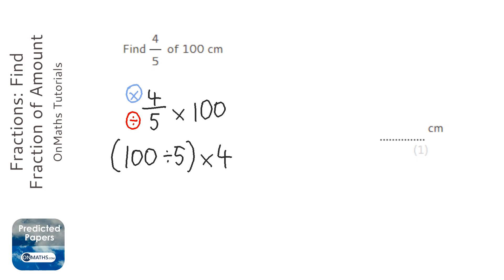So 100 divided by 5, well 5 times what is 100? 20. And then 20 times 4, well 2 times 4 is 8, so 20 times 4 is 80.